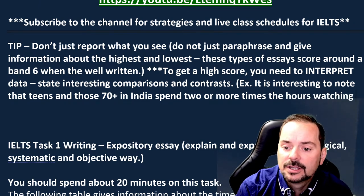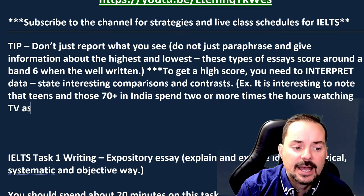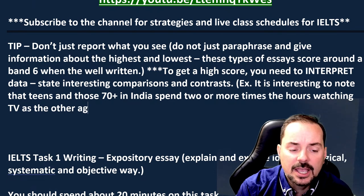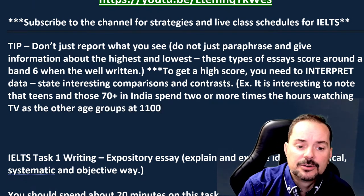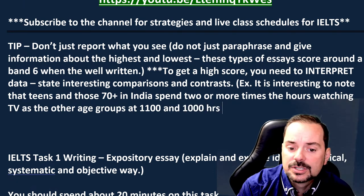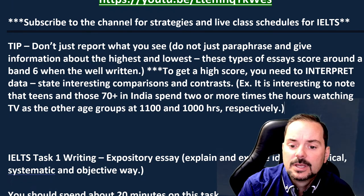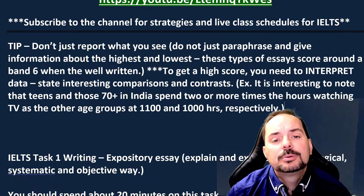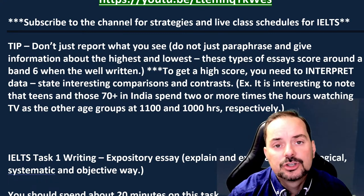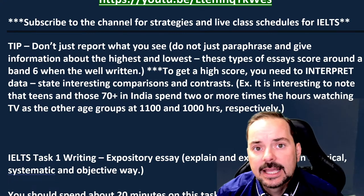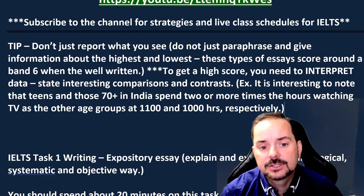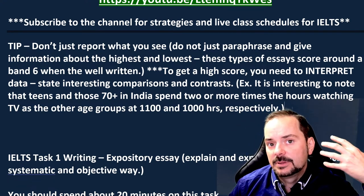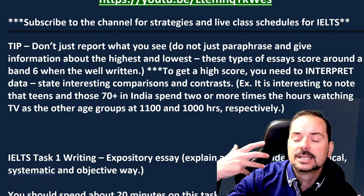For example: 'It is interesting to note that teens and those 70 plus in India spend two or more times the hours watching TV as the other age groups — at 1,100 and 1,000 hours respectively.' That's an interpretation of data. Interpretation of data is college and university level writing, not high school level writing. That's the difference between simply reporting versus interpreting.